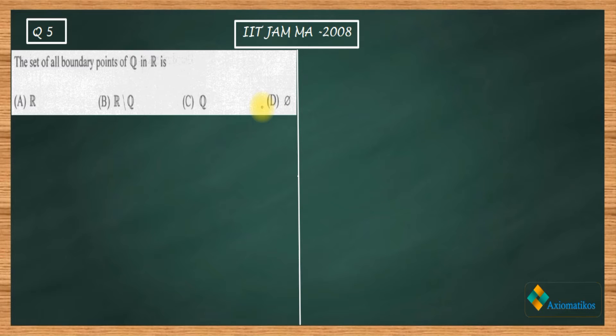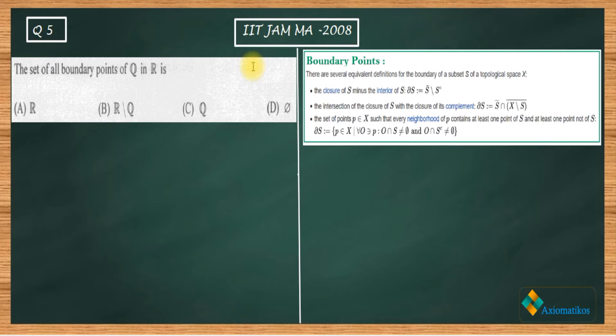So firstly what we need to define - we need to define boundary points for a set. And only after that we can figure out this question. So let me show you the definition for this. So this is the definition we are going to look at, just the first definition. So we have three equivalent definitions for the boundary points of a subset S of a topological space.